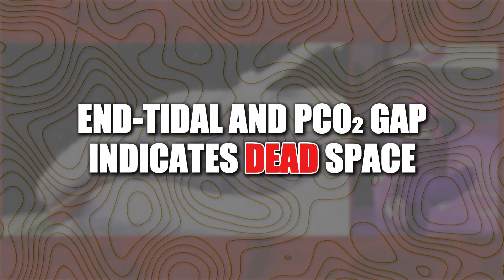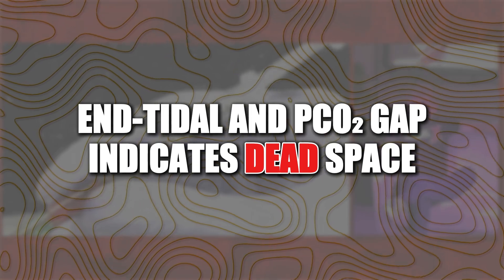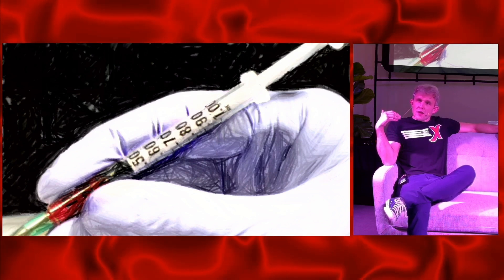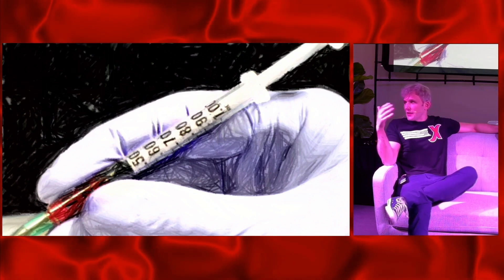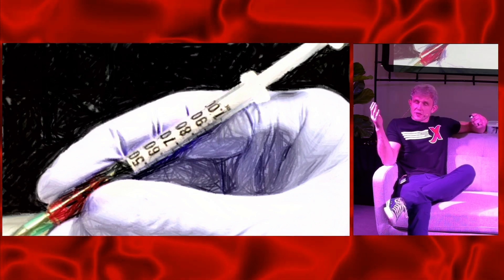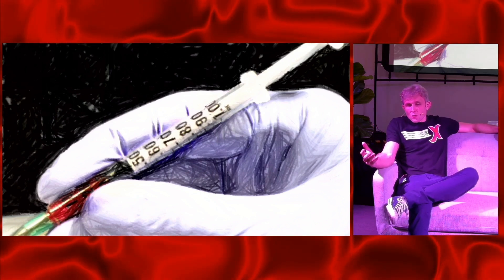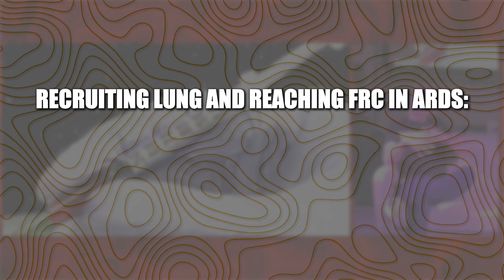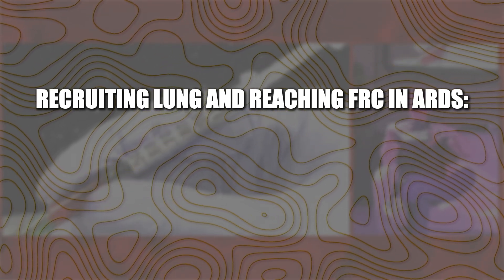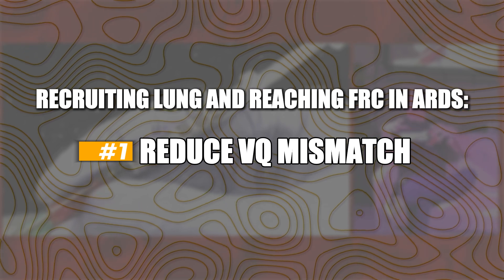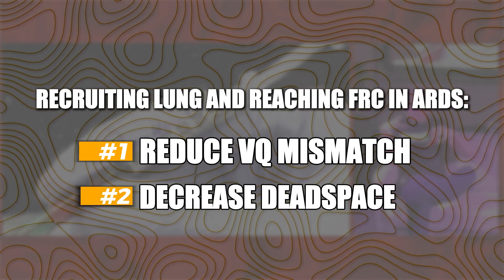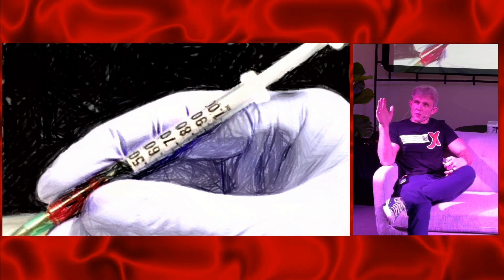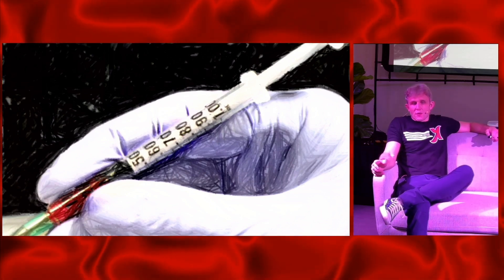End-tidal is a good marker of dead space. If a patient isn't in shock and there's a large difference between end-tidal and PaCO2, it usually represents dead-space ventilation. This is especially relevant in ARDS: as you recruit lung and bring the patient closer to FRC, you improve VQ mismatch and decrease physiological dead space, so end-tidal gets closer to actual PaCO2. For me it's a marker of getting patients closer to FRC.